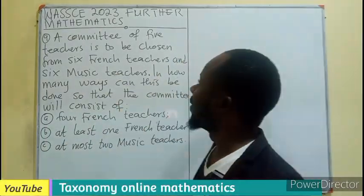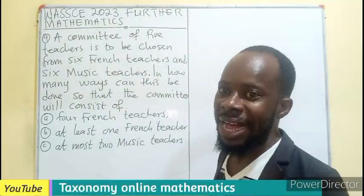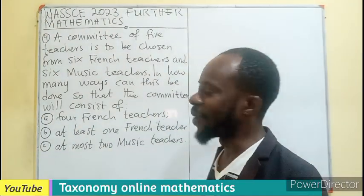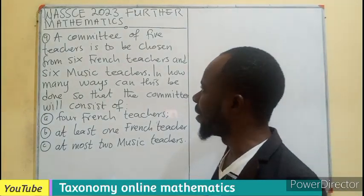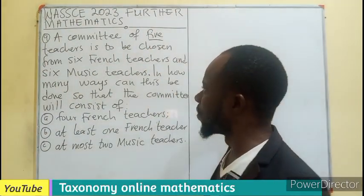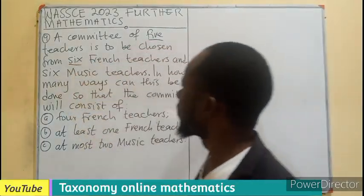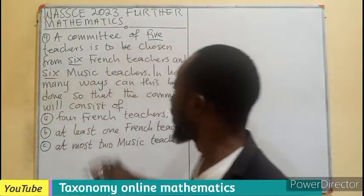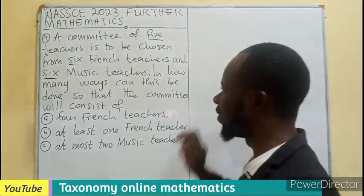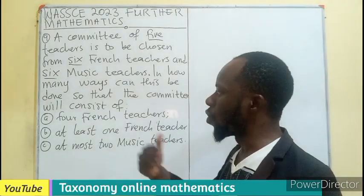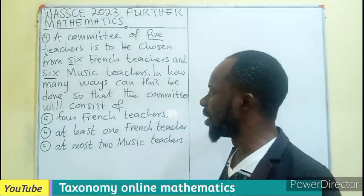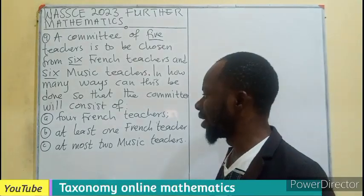Welcome. WASI 2023, Federal Mathematics, the Elective Maths, Section B, Question Number 9. A committee of five teachers is to be chosen from six French teachers and six music teachers. In how many ways can this be done so that the committee will consist of: A, four French teachers; B, at least one French teacher; and C, at most two music teachers.